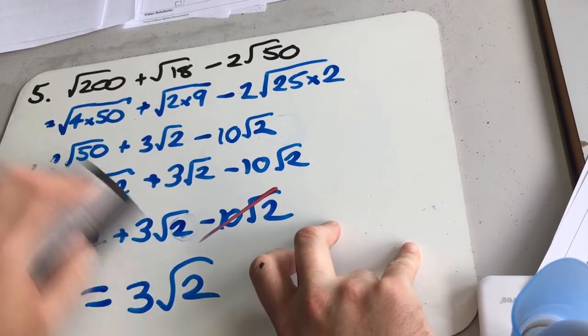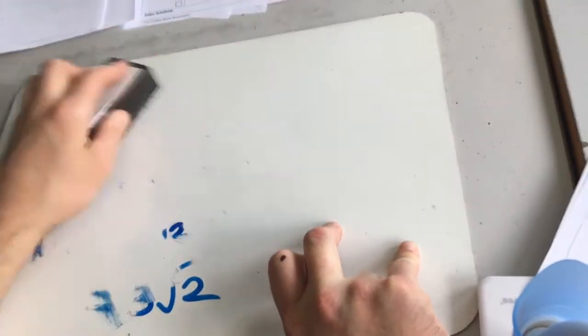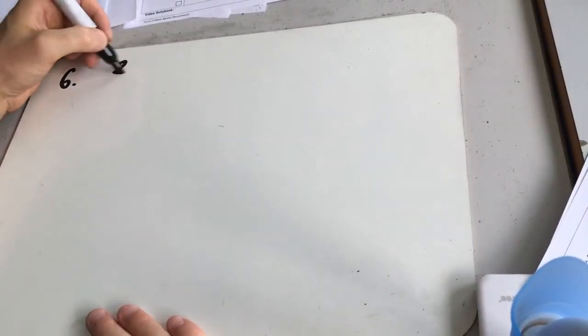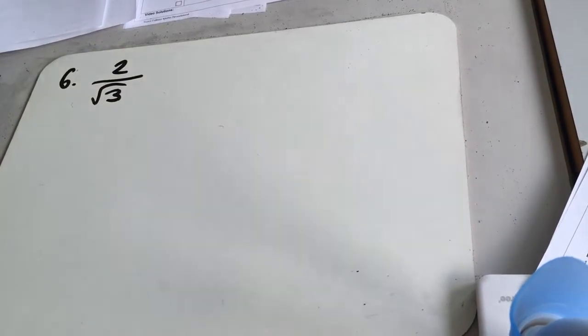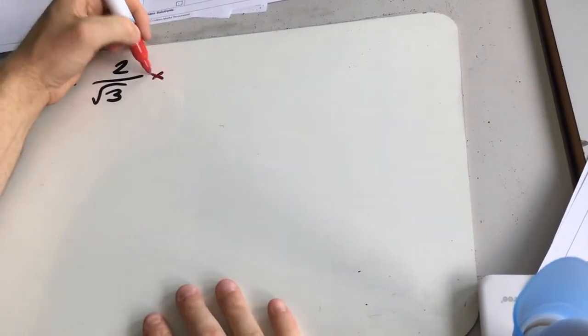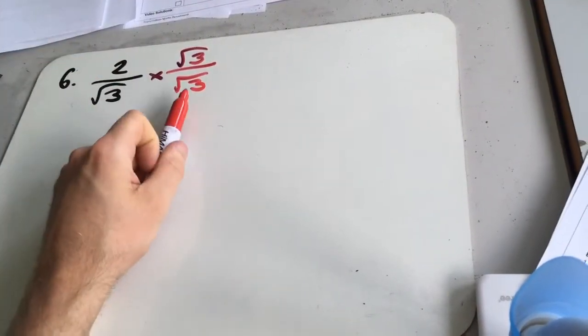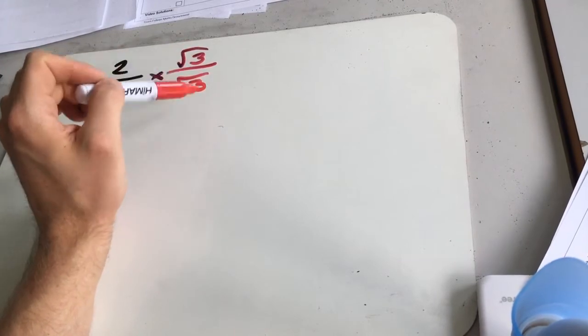So three more questions on surds, which are all about rationalising the denominator. So if you're not sure on the rules of these, again, look through the workbook. Question 6 then. We want to rationalise 2 over root 3. So to rationalise something like this, you're just going to times the equation by root 3 over root 3. You've got to make sure the fraction that you're timesing by is always 1. So it always has to be the same on top and on bottom, because otherwise you're completely changing the question.